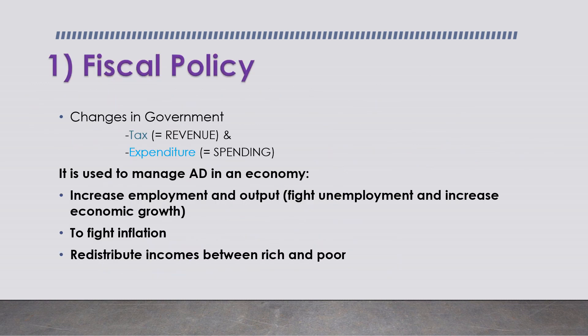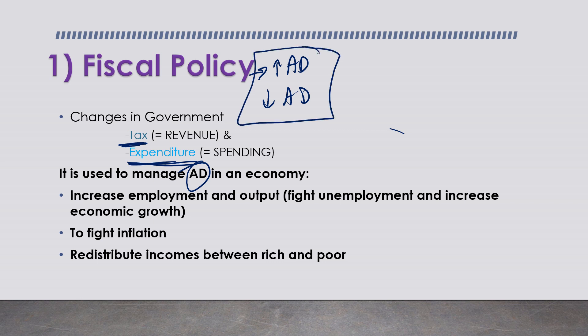What is fiscal policy? Fiscal policy involves changes in government tax and expenditure - the government will either increase or decrease tax, or increase or decrease expenditure. It is used to manage aggregate demand in an economy, so the government will either increase or decrease aggregate demand according to what they want to achieve with tax or spending.